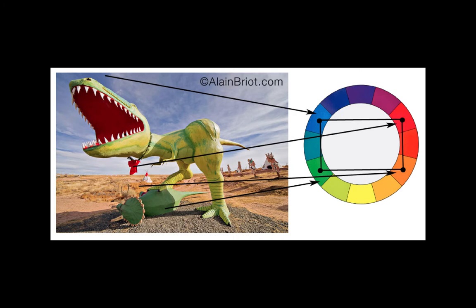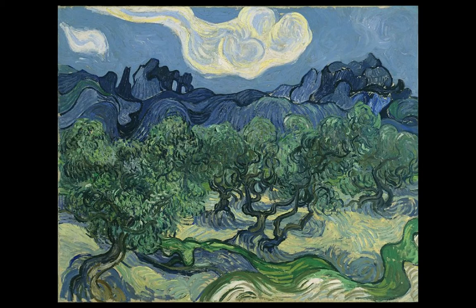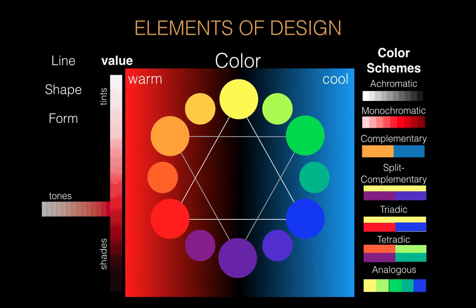Here's a tetradic set. It's a little misleading because the color wheel in this image is flipped upside down, but you have blue, red, orange, and green. And here we have an example of an analogous set: Vincent van Gogh's painting uses yellows, yellow-greens, greens, blue-greens, blues — all one after the other on the color wheel.